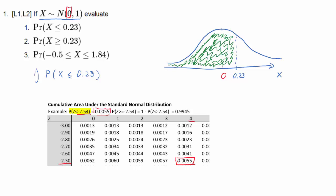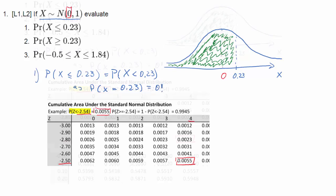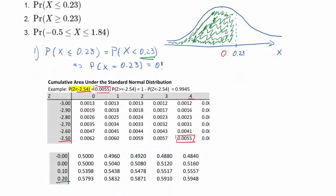For instance, the probability that X is smaller than negative 2.54 gives us 0.0055 — that's the area represented in the table. But that's not the one we need. We want the probability that X, which is also standard normally distributed, is smaller than 0.23. Note that P(X ≤ 0.23) equals P(X < 0.23) because for a continuous random variable, the probability that X is exactly 0.23 is zero. Finding 0.23 in the table gives us 0.5910. That's the probability that X is smaller than 0.23 — the size of the green area — which is exactly what we were after.